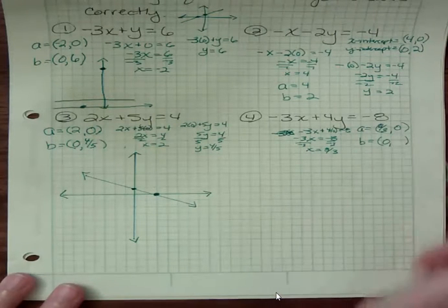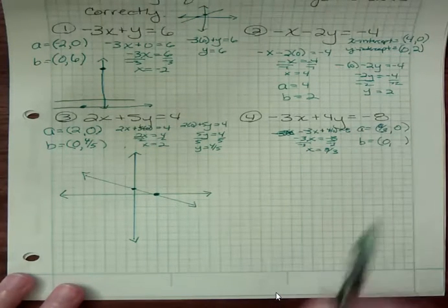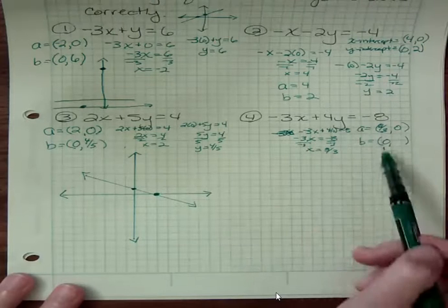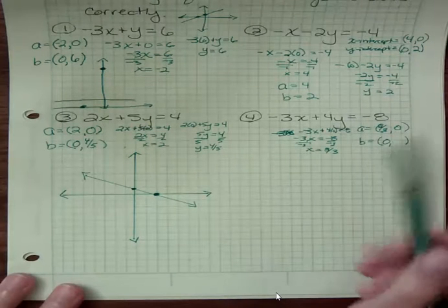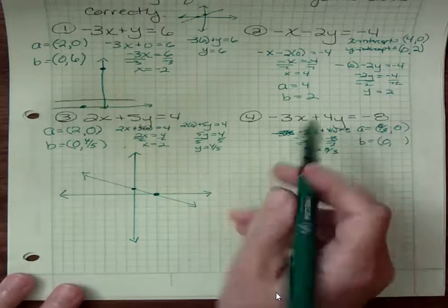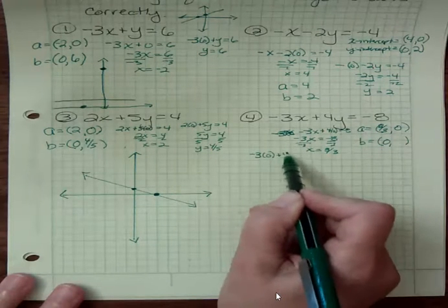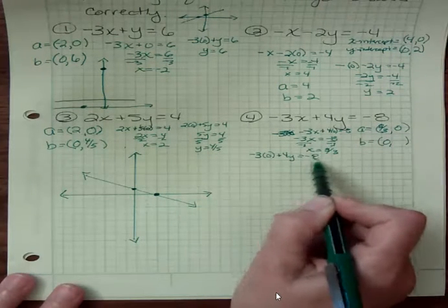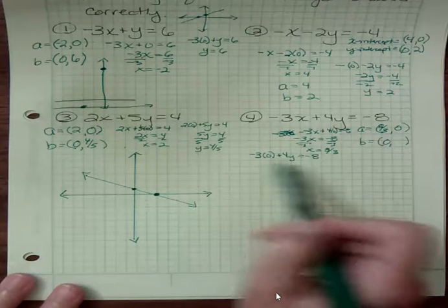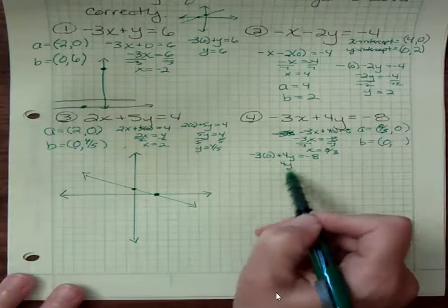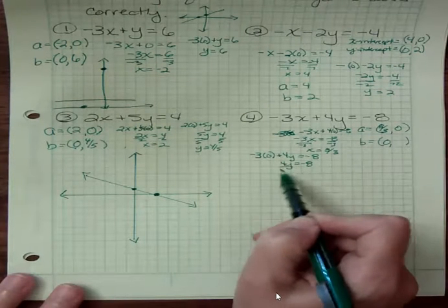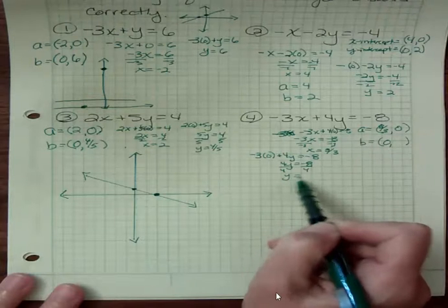Again, a fraction but I'm not afraid of it. And then what if x is zero? Negative three times zero plus four y is negative eight. This term drops out to zero. Four y is negative eight and dividing both sides by four I get y equals negative two.